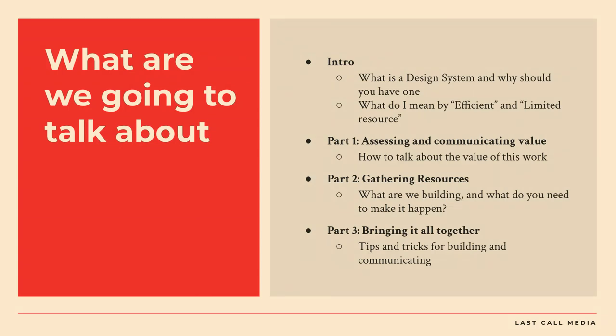So what are we going to talk about today? First, we'll do an intro — what is a design system and why you should have one. What do I mean by efficient and limited resource? In part one, we're going to assess and communicate value — talk about the value of the work. Part two, we're going to talk about gathering resources: what are we building, what do you need to make it happen? And in part three, we're going to talk about bringing it all together — some tips and tricks for building and communicating.